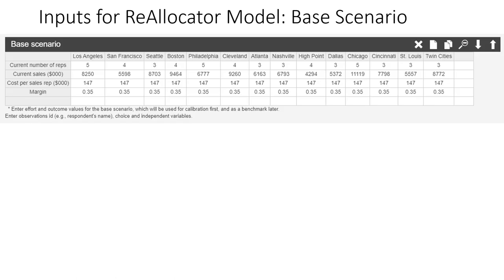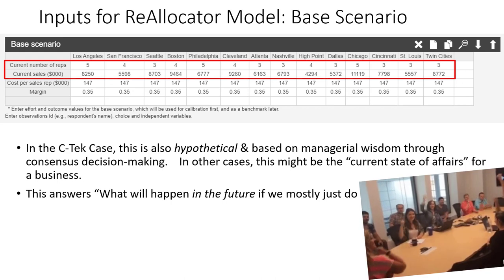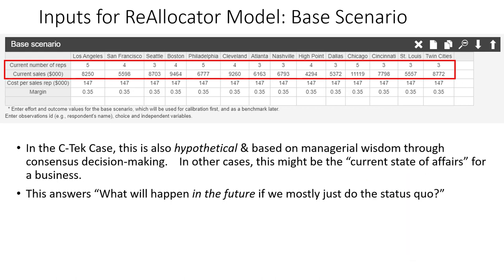In InGenius, we have an entire table dedicated to our base scenario. The 14 different regional markets organize the columns. The first row shows the current number of sales reps — in this case, the hypothetical current number, or status quo. The current sales value is also a hypothetical value harnessed through that managerial wisdom process described in appendix one. It represents expected sales at the status quo level of sales representatives.